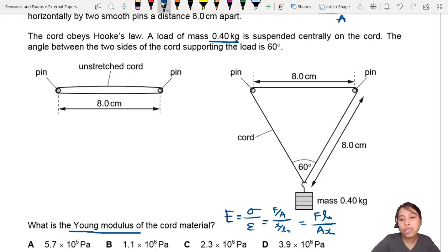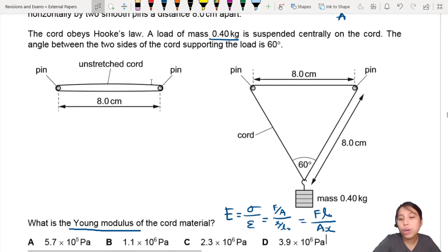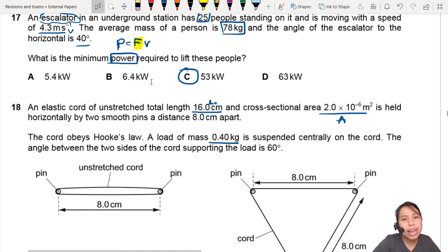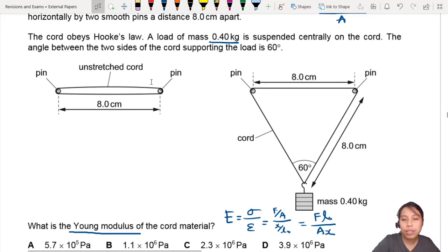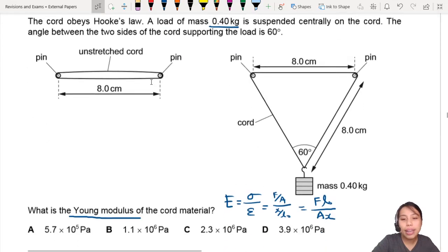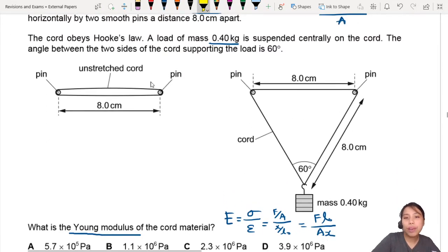L0 is original length. Do we know the original length? Yes, we do: 16 cm. Do we know the force acting on this string? No, we need to find that. Do we know the cross-section area? Yes. Do we know the extension? No. So we need to find F and X.